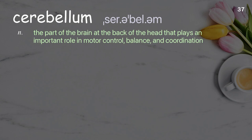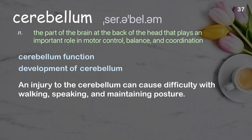Cerebellum: the part of the brain at the back of the head that plays an important role in motor control, balance, and coordination. Examples: cerebellum function; development of cerebellum. An injury to the cerebellum can cause difficulty with walking, speaking, and maintaining posture.